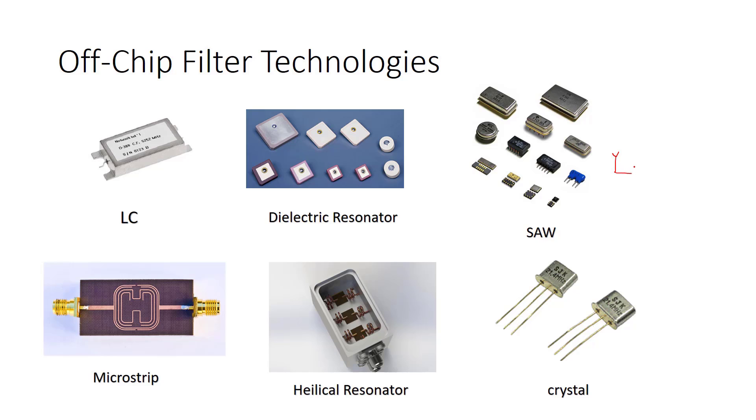SAW filter is commonly used. For example, as you remember we said that we have antenna, and there is a SAW filter here. There is a filter here, and then we have our receiver. Generally, if you want to use off-chip filter, we use SAW filter.